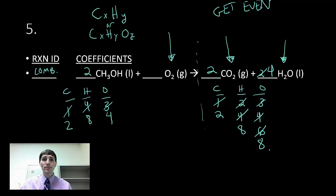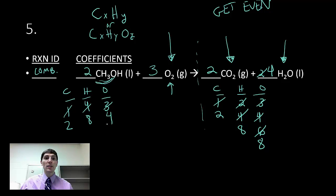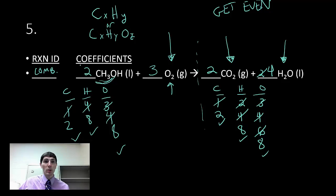Now I'm saving oxygen for last and going to the left-hand side. I have O2 which will give me the boost I need. I need 8 oxygen total and already have 2 from the hydrocarbon, so I update the O2 coefficient to 3: 3 times 2 is 6, plus the 2 from the hydrocarbon gives 8. Now everything balances — carbon: 2, hydrogen: 8, oxygen: 8 on both sides. My final coefficients are 2, 3, 2, 4.